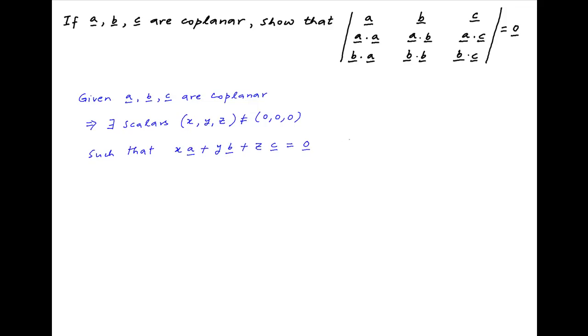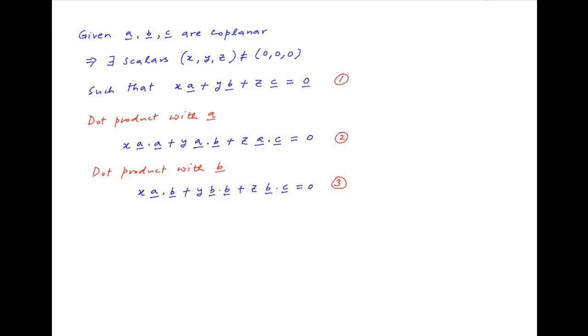Now take the dot product with vector a on both sides of equation 1. We get x times a dot a plus y times a dot b plus z times a dot c is equal to 0. Similarly, take the dot product with vector b on both sides of equation 1. We get x times a dot b plus y times b dot b plus z times b dot c is equal to 0. Let's call these equations 2 and 3 respectively.